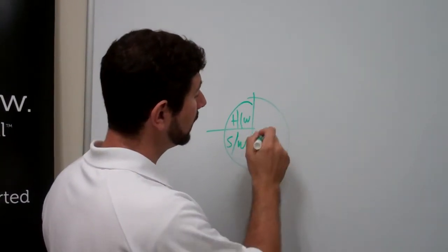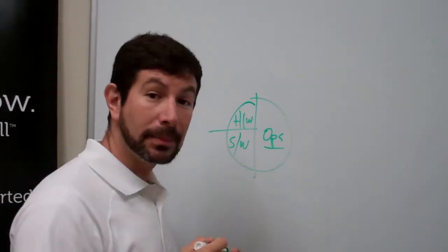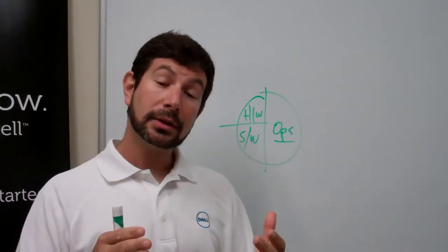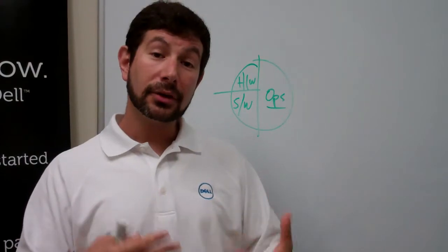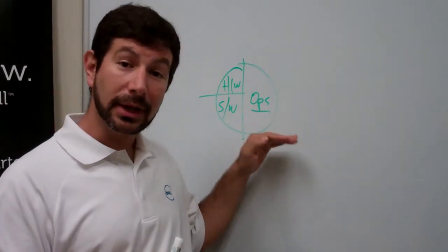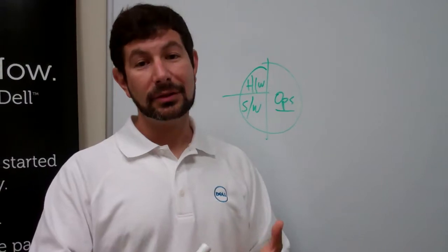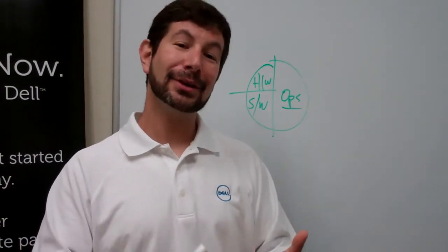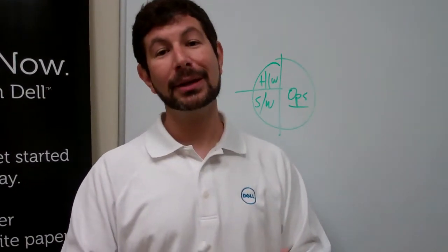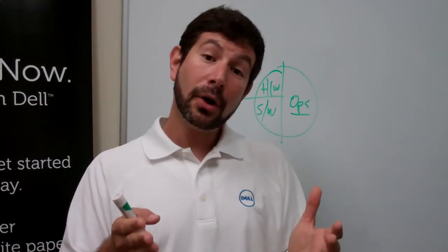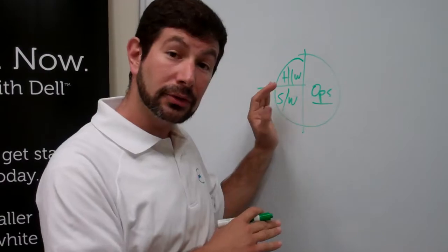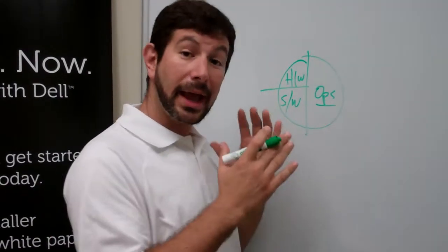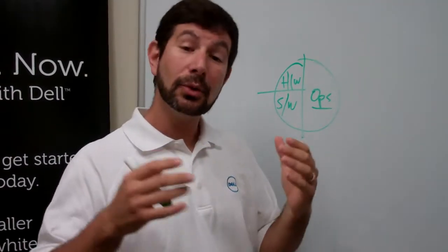And then there was a significant operations capability that somebody wanting to deploy, a customer wanting to deploy a cloud solution needed to understand. They had to be able to operate their data center, they had to deal with DNS and DHCP and NTP and imaging and monitoring and performance management, security. All those components are really separate from the solution software, so in this case OpenStack, it has those pieces and they're starting to come in, but you have to bring them all together.